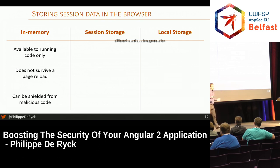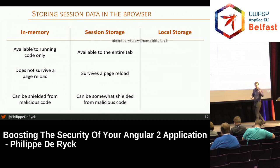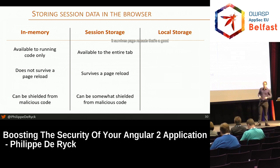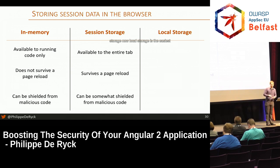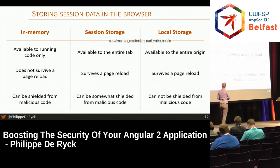Session storage is lesser known — it's context-related and tab-related. It's available to all code from that origin in that window, and shared when you open a new window from within. If you open an entirely new browser window, you get a fresh session store. It survives page reloads, but it's not shared across windows. In case of an injection attack, it needs to happen in the specific tab where the token lives. Local storage is the most commonly used — available to the entire origin, survives page reloads, easily shareable — but if you have an injection attack anywhere, it's very easy to steal that token from local storage.